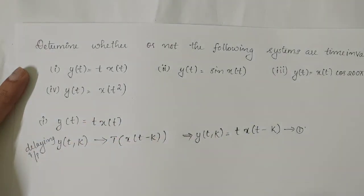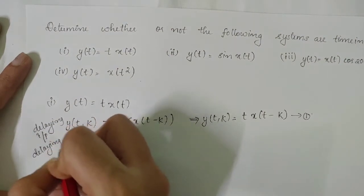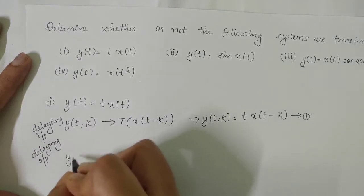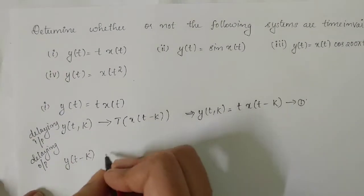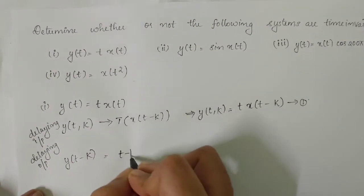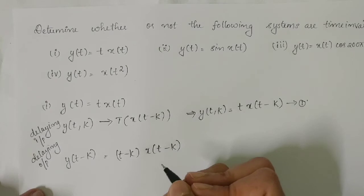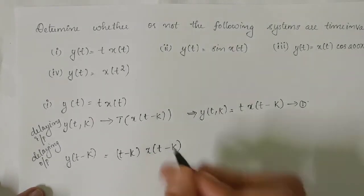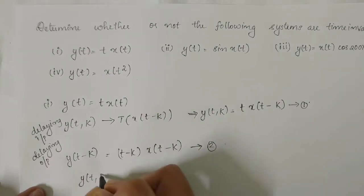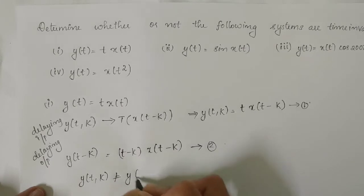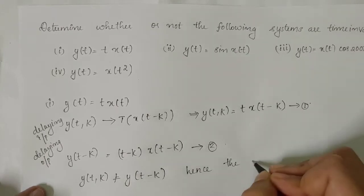Delaying the output is denoted by y(t−k), which equals (t−k)·x(t−k). This is the second equation. Since y(t,k) ≠ y(t−k), hence the system is time variant.